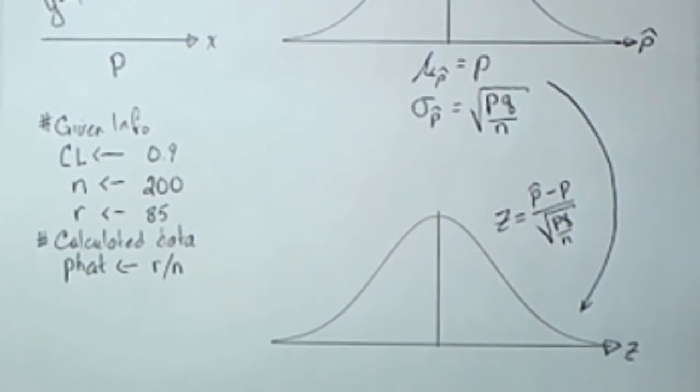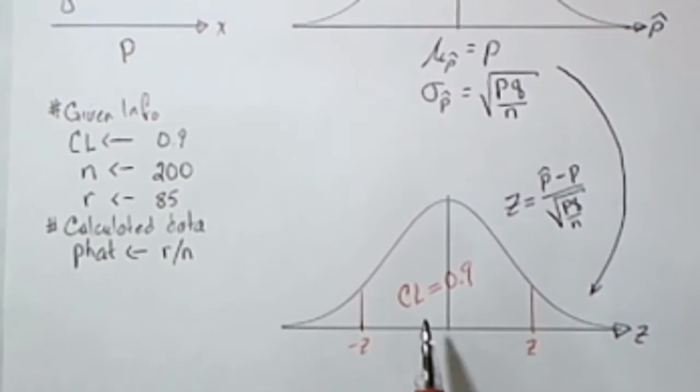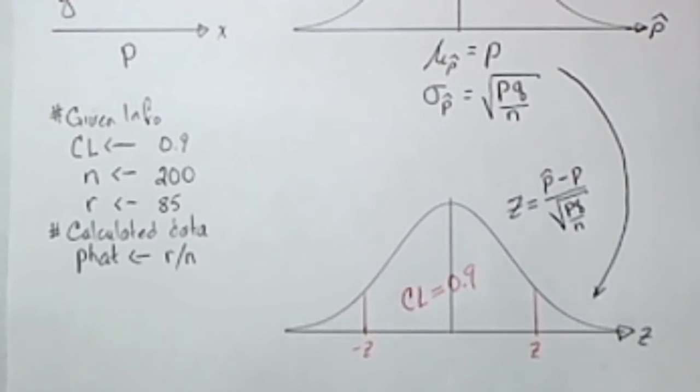Now turn your attention to the standard normal distribution. We want to find a Z value so that 90% of the population is between minus Z and Z.